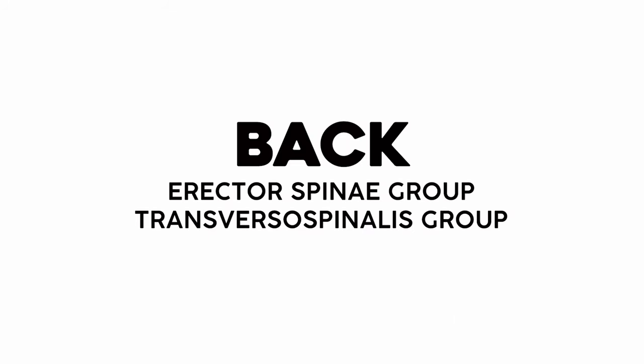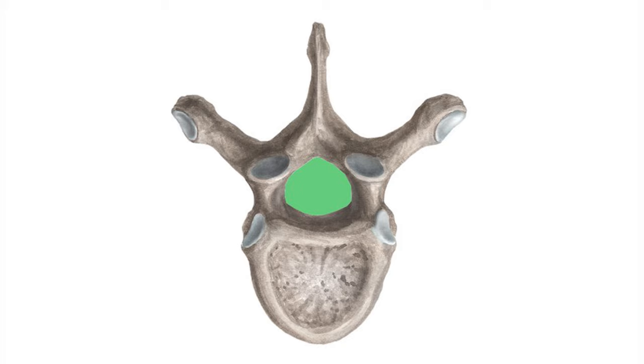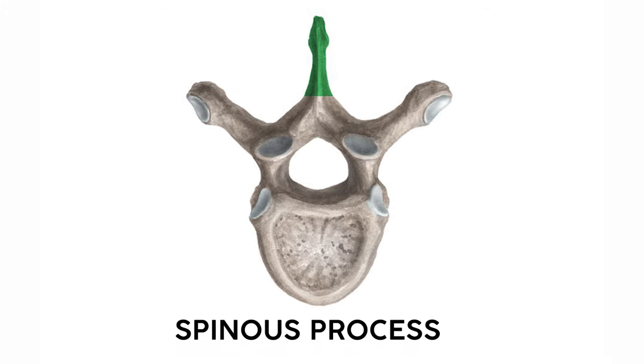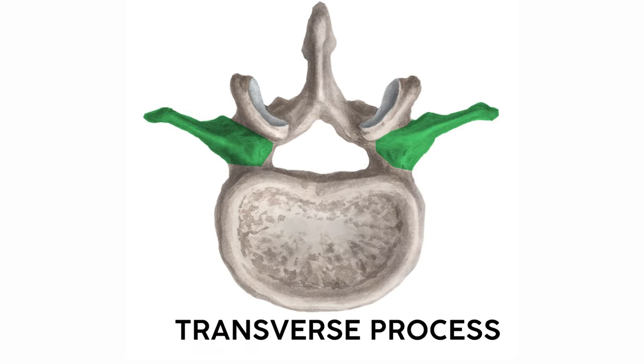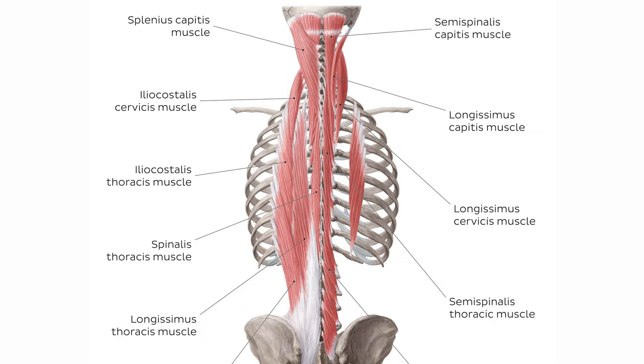As we move on to the back muscles, your saving grace will be knowing your vertebral skeletal anatomy, so let's do a quick review. Here's your run-of-the-mill vertebral bone. This big piece in the center is called the spinous process, and these pieces on each side are called the transverse processes. So if you see spinous or transversus in the muscle name, you can start thinking about attachments to the spinous or transverse processes respectively. Some muscles are big muscles that span the entire spinal column, while others are multiple tiny muscles between each vertebra.